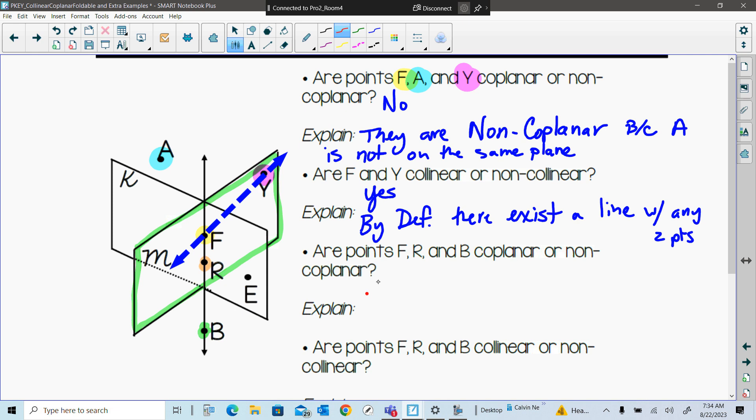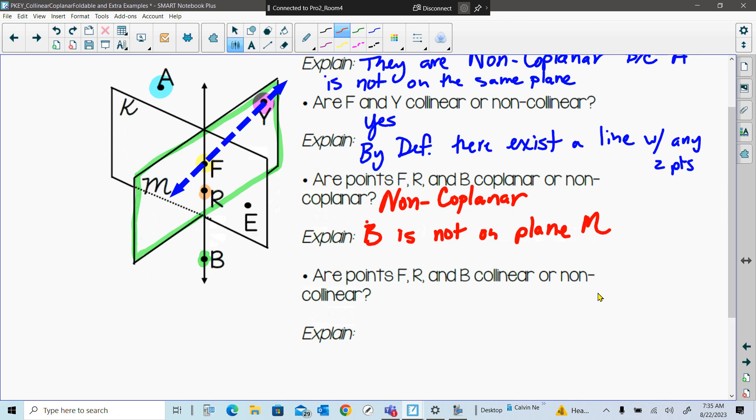Okay, so this is non-coplanar. And then our explanation would be, coplanar, is that B is not on plane M. All right, and then our last one. What is it? Yeah, they are collinear. Hopefully you can see they are on this line, this vertical line. Okay, so this would be collinear. All three points on the same line.